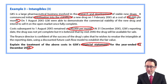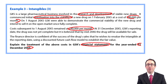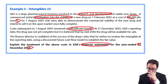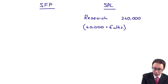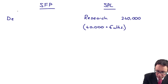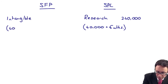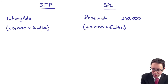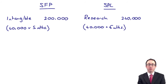Then subsequent to that, right the way up to the end of the year — end of December — we then have the development phase. August, September, October, November, December — that is five months. The development cost is capitalised as an intangible: $40,000 multiplied by five months gives $200,000.